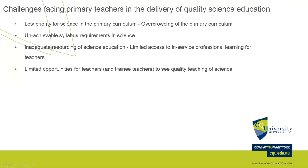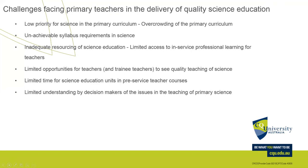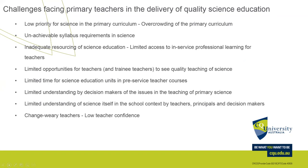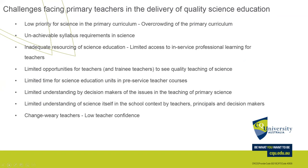There's also inadequate resourcing in science education, limited opportunities for teachers to see quality science teaching, and limited time for science education in pre-service teacher courses — we're experiencing that too. There's limited understanding among decision makers of the issues of teaching primary science, and also change-weary teachers. We're seeing a lot of stress in schools. The Primary Connections model actually addresses professional learning — it provides resources and curriculum units built on five pillars: collaborative learning, the 5E model, science and literacy, science investigations, and assessment.